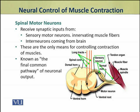Spinal motor neurons are the only means for controlling the contraction of muscles. So they are known as the final common pathway of neural output.